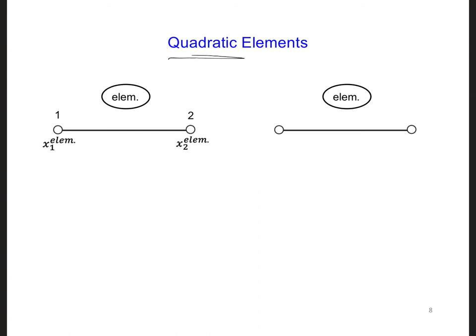For example, we could use quadratic interpolation between the nodes of the grid instead of linear interpolation. For reference, on the left side of this slide is a linear element.